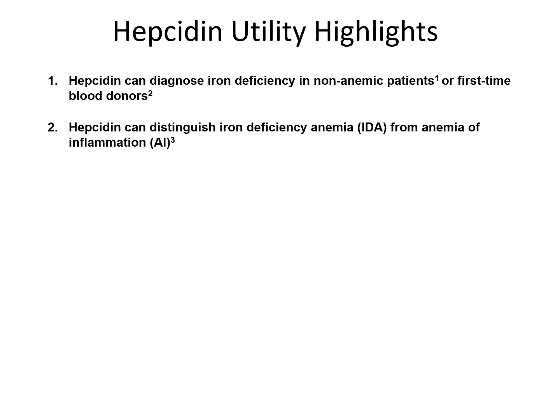The upregulation of hepcidin during states of inflammation is responsible for anemia of inflammation. As such, its levels can distinguish between iron-deficiency anemia — low hepcidin — and anemia of inflammation — high hepcidin.